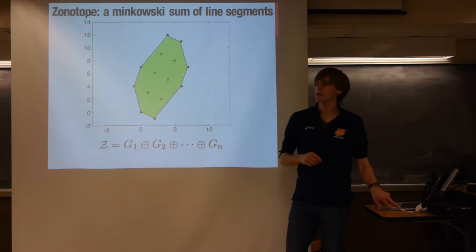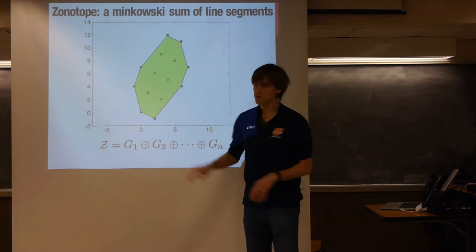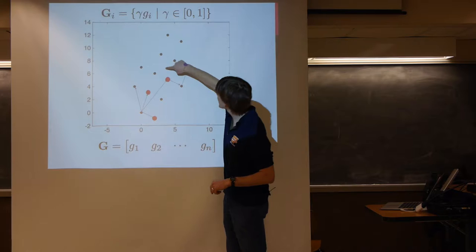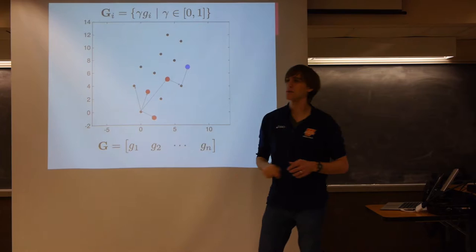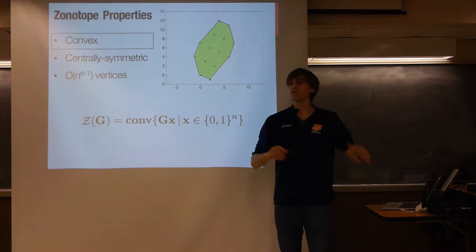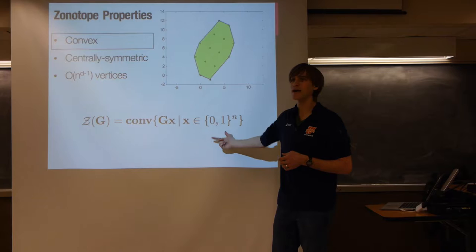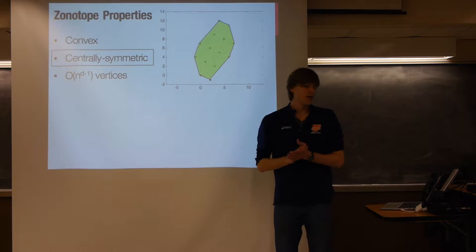So we can say the zonotope Z is the Minkowski sum of line segments. An audience member asks if getting the vertices always means taking gamma equal to 1. Yes — in those examples gamma was taken to be 1 or 0 for each generator, but any point in the interior corresponds to some combination of intermediate pieces on those line segments. Moving into properties: zonotopes are convex objects, which is especially clear from the definition as a convex hull.